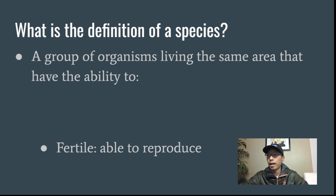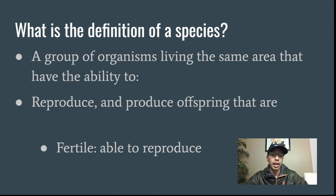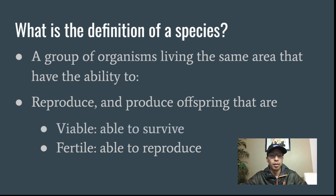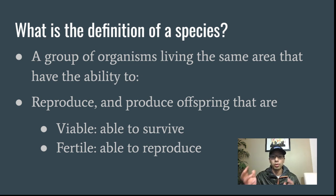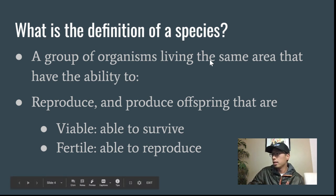A species is a group of organisms living in the same area that have the ability to reproduce, and when they reproduce they must make offspring that meet two really important criteria. First, the offspring have to be viable — meaning they have to be able to survive. If a baby doesn't develop correctly, can't digest food, or has body parts that don't work, that's not viable. Second, the offspring have to be fertile, meaning they have the ability to reproduce. Fertile is the opposite of sterile — if an organism is sterile, it can't pass its genes on.